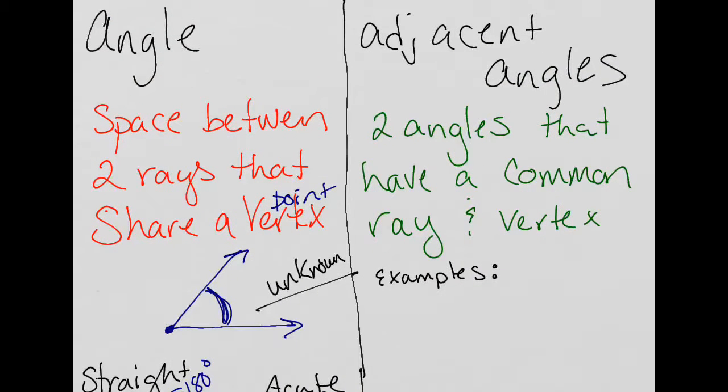Adjacent angles are two angles that have a common ray and vertex. So an example, here's a vertex. Here's two rays. So I now have one angle, we'll call this angle one. I need a second angle that shares that vertex and one of the rays. So we're going to use this ray as the common ray. Here's my common vertex. And I'm going to go in a different direction. Here I have angle two. Those would be adjacent angles.